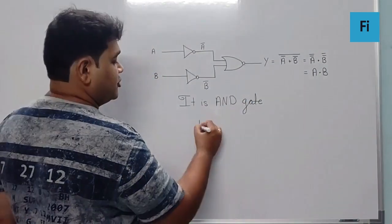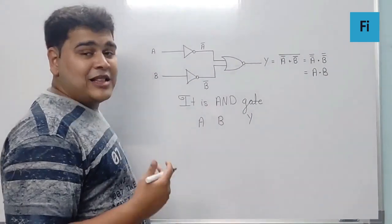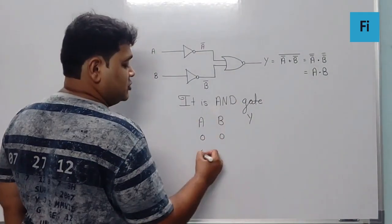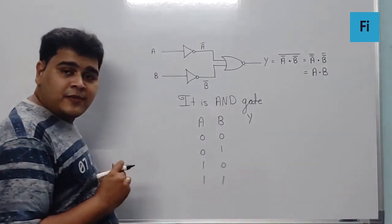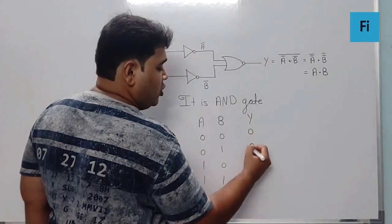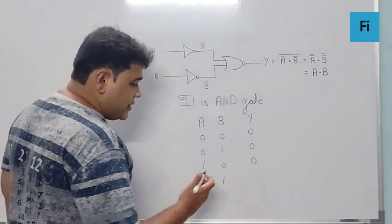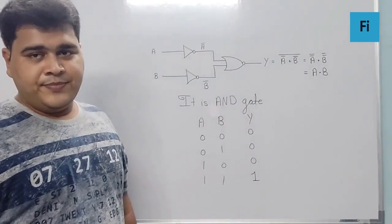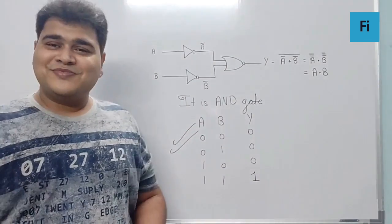If this is an AND gate, the truth table must have A and B values where the possible inputs are 00, 01, 10, 11. The output is going to be zero for all the inputs except when both the inputs are 1. So this should be your correct answer.